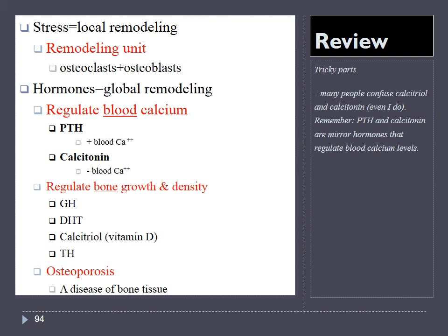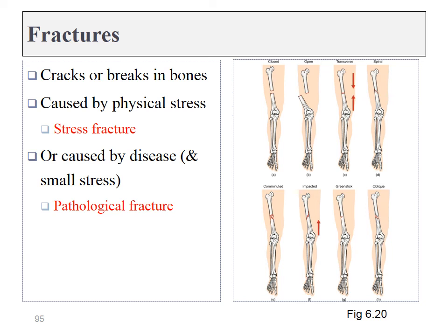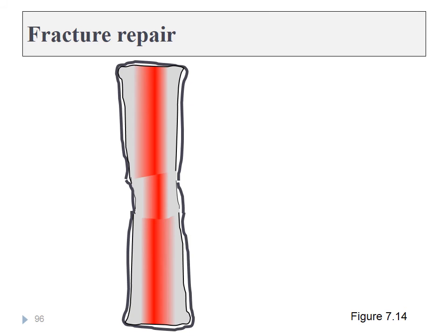We talked about stress on bone tissue and how that can lead to remodeling. We talked about the remodeling units and why it's important for both osteoclasts and osteoblasts to work together. We covered a number of hormones and then brought that all together to discuss the disease osteoporosis. The last thing we need to cover is bone fractures — usually caused by physical stress, but exacerbated by certain diseases like osteoporosis.